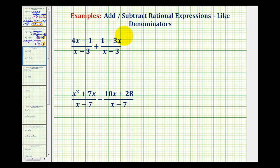So for this first example, notice how both denominators are the quantity x minus 3. So it will stay at the quantity x minus 3, and then we'll add the numerators. So we'll have the quantity 4x minus 1 plus the quantity 1 minus 3x.